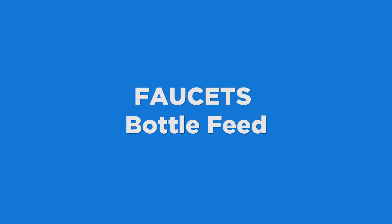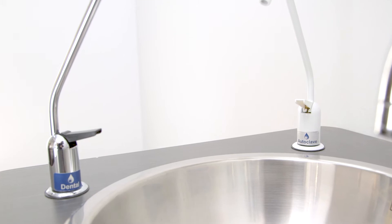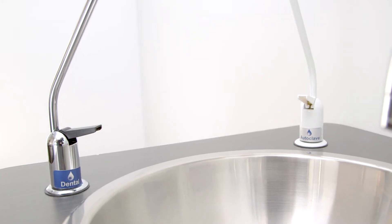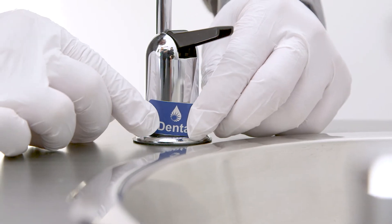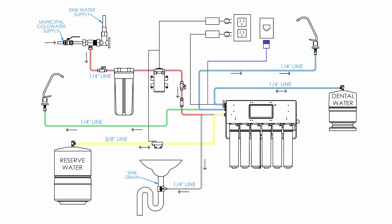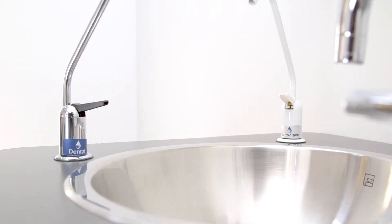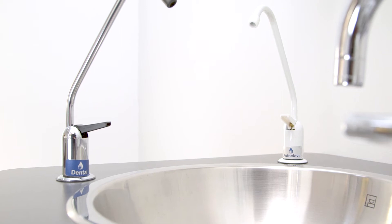Faucets. The bottle fill configuration includes a white autoclave faucet and a chrome dental water faucet. Dental water is always plumbed to the chrome faucet. The faucet can be mounted on a countertop or on a wall using an optional remote mounting bracket. For the purposes of this demonstration, we'll go over countertop mounting.